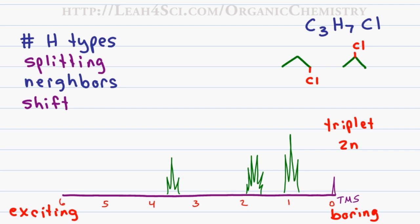For the second peak, I count a total of six tips and that gives me a sextet. Using the reverse of n plus one, I know that I have five neighbors.